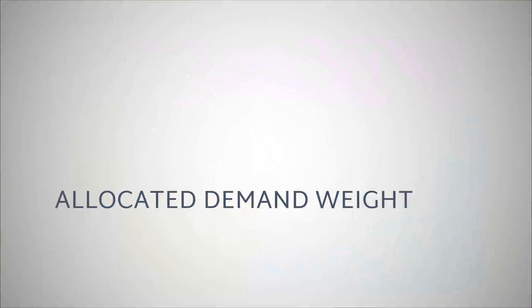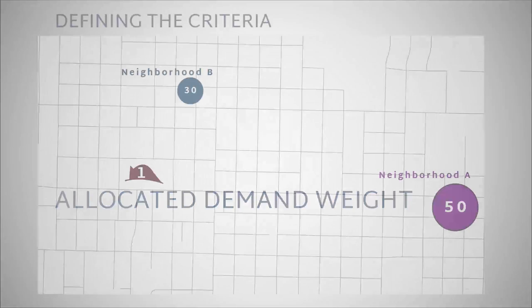Allocated demand weight is the allocated sum of the effective demand from all demand points that were assigned to the facility. In this scenario, our demand points are weighted by the frequency of calls at a specific location. A neighborhood with a history of many incident responses will have more weight than an area with only a few.